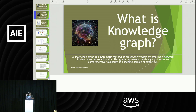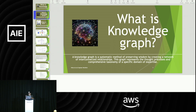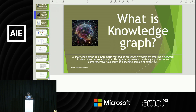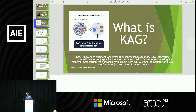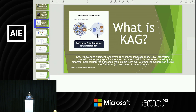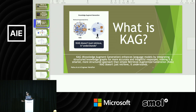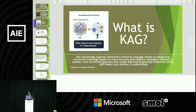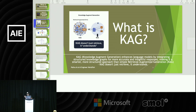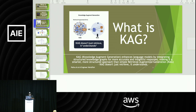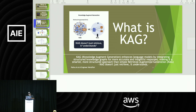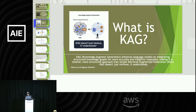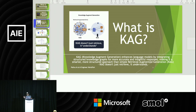This is very important for people moving forward. It's about AI systems that think a lot and return advice instead of just retrieving data from your database. That brings us to the development of KAG. What is KAG? KAG stands for Knowledge Augmented Generation, and it's different from RAG. It enhances language models by integrating structured knowledge graphs for more accurate and insightful responses, making it a smarter, more structured approach than simple RAG.